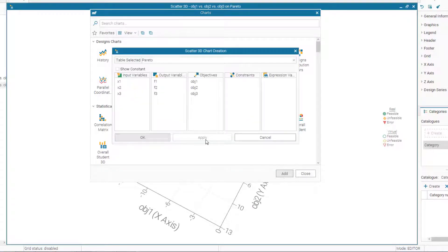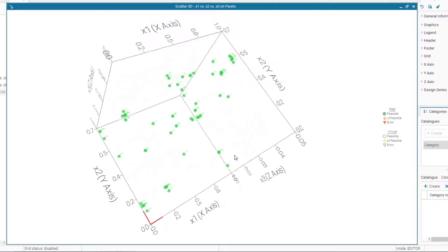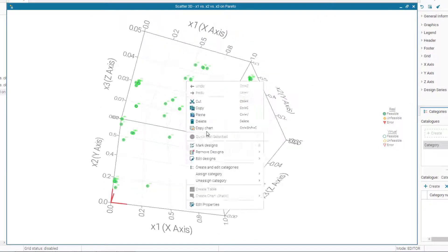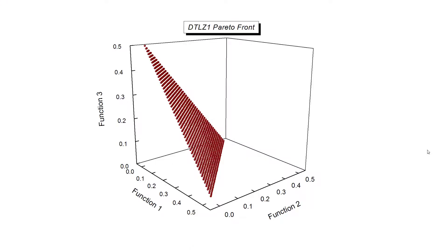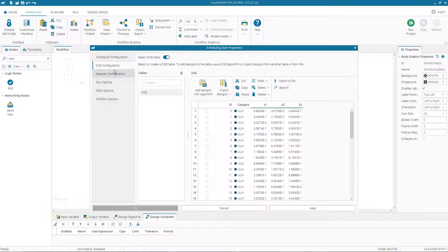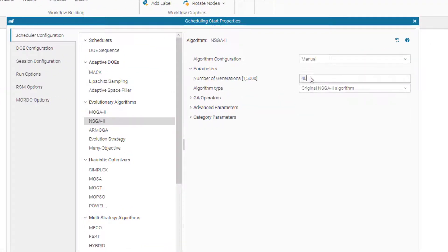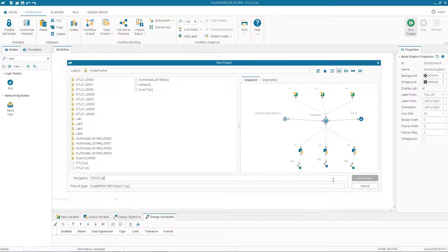We can also create a 3D scatter chart in decision space using x1, x2, and x3 as axes to show Pareto optimal solutions in the input space. However, comparing our Pareto front to the one from the literature, they don't look similar — the algorithm likely did not converge with only 10 generations. We decide to increase the number of generations and rerun to see if we get a better result.